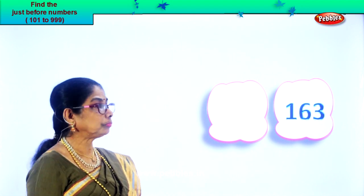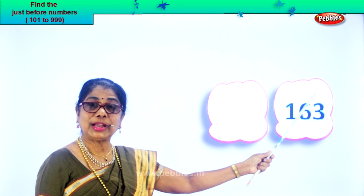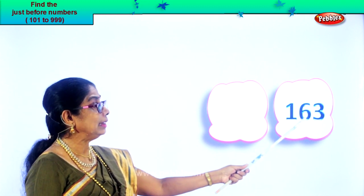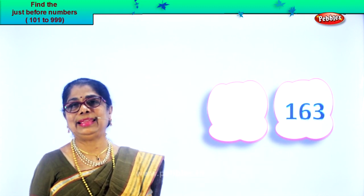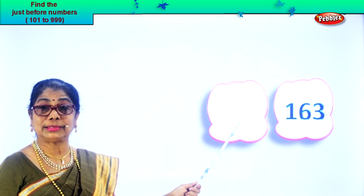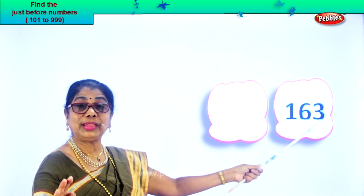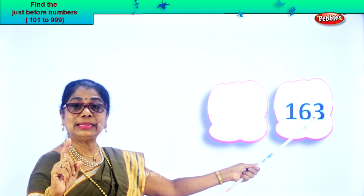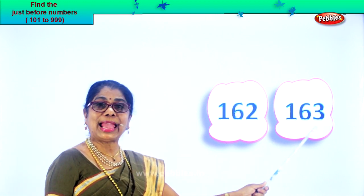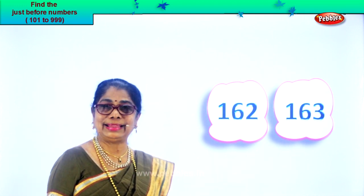Look what you have here. In the hundredths place there is one, tens place you have six, and in the ones place you have three. Read the numeral: 163. And we're looking for the number before 163. In the ones place you have three. What is one less than three? Two. So: 162.